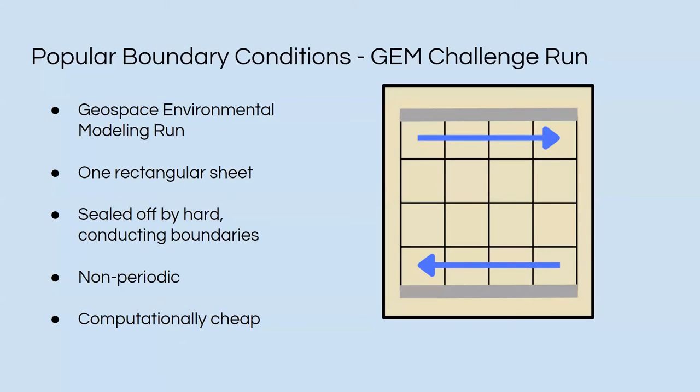So let's talk about boundary conditions. We will talk about two popular ones first. First off, we have the GEM run, the GEM challenge run, or the Geospace Environmental Modeling run. It consists of one rectangular sheet pictured here. It's sealed off by hard conducting boundaries on the top and bottom. It's computationally cheap, but the disadvantage is it's not periodic.